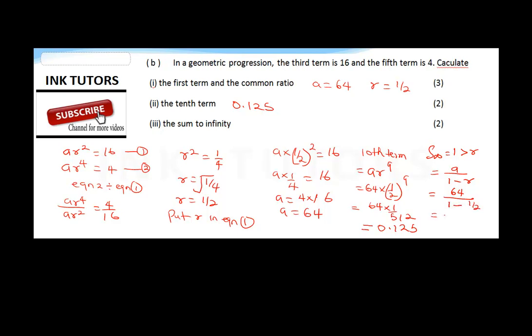So this will be equal to 64 divided by 1/2, and this will give us, that's 64 times 2, bringing the 2 up, that will be 128. So this is our final answer. Therefore, the sum to infinity is going to give us 128.